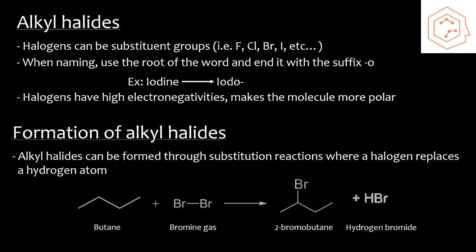Alkyl halides can be formed through substitution reactions, where a halogen will replace a pre-existing hydrogen atom. There can be multiple halogens on one compound, but right now we're just going to look at it as one halogen is added at a time. Here we have a reaction between butane and bromine gas, where, as you can see, the bromine basically evicted one of the hydrogens, and it formed 2-bromobutane and hydrogen bromide, or hydrobromic acid.